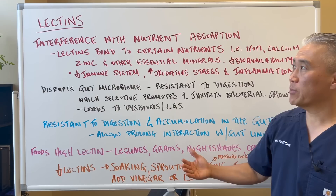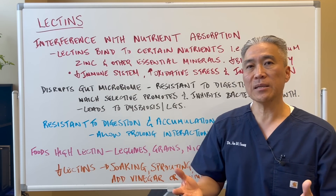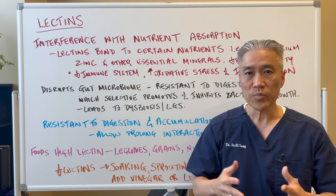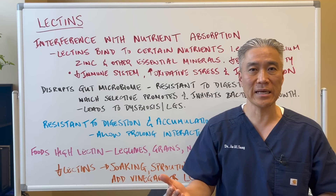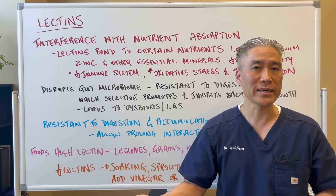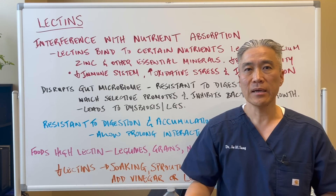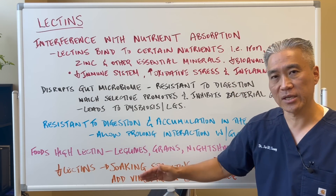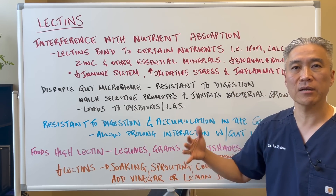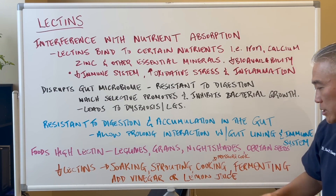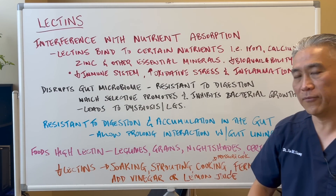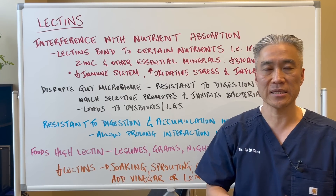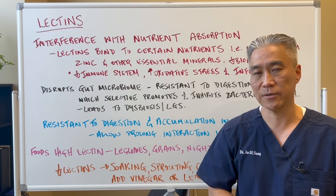This impacts a good portion of the population. What you want to do is probably eliminate lectins for four to eight weeks, and then reintroduce them using methods like soaking, sprouting, fermenting, and using vinegar or lemon juice to minimize the impact of lectins in your system.